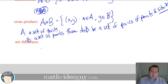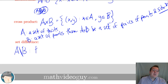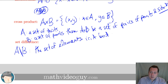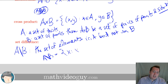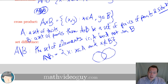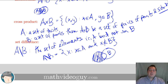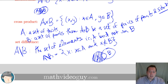The last operation is set difference, written A \ B. This is the set of elements in A but not in B, formally: {x such that x ∈ A and x ∉ B}. In a Venn diagram, A \ B corresponds to the portion of A that does not overlap with B. That covers the basics — feel free to review this and post any comments if anything is unclear, and I can post a follow-up video if needed.